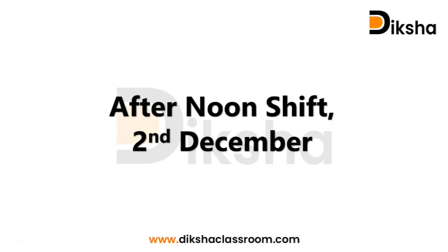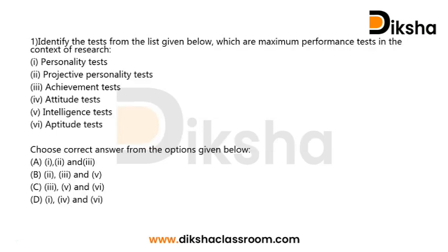In this video, we are going to discuss the questions that appeared from the topic of research aptitude in the afternoon shift, 2nd December paper 1 examination. Question number 1: Identify the tests from the list given below which are maximum performance tests in the context of research. Six options are given — personality test, projective personality test, achievement test, attitude test, intelligence test, and aptitude test.